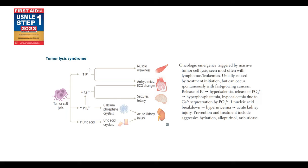With chemotherapy, tumor lysis syndrome may develop. Chemotherapy causes death of a massive amount of blast cells in a very short period. Dying blast cells release intracellular contents into the blood: potassium causing hyperkalemia (muscle weakness and arrhythmias); phosphate, which binds calcium causing hypocalcemia (predisposing to arrhythmias and seizures); and calcium phosphate crystals, which can cause acute kidney injury.